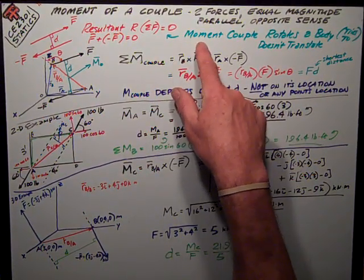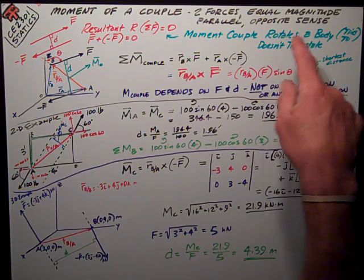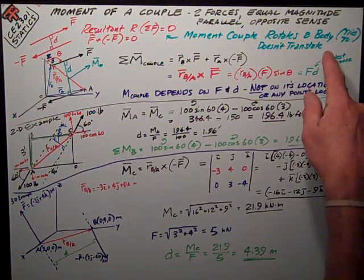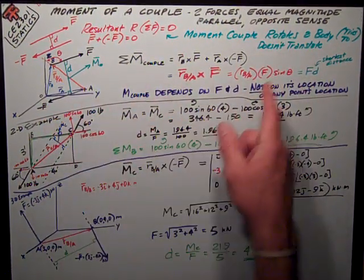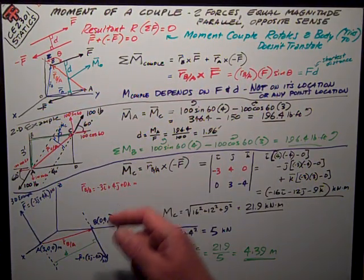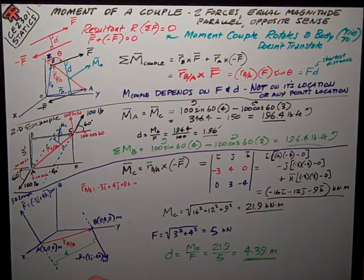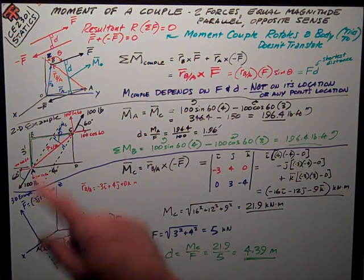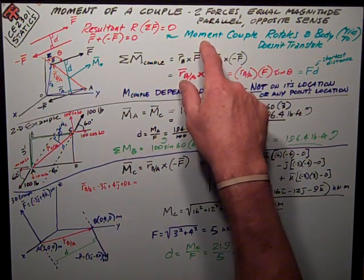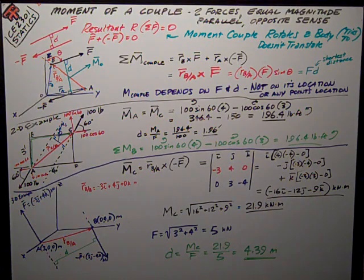A moment couple tries to rotate a body. It does not try to translate a body, because the force is what translates it and the moment is what tries to rotate it. It's a pure moment, a force couple.